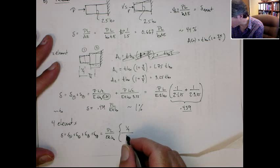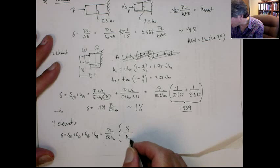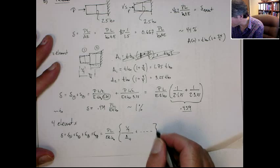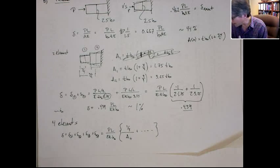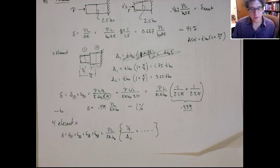And that something is what goes here. I'll call that area factor. So you sum all these up, multiply it by PL on ETH naught, and that's the deflection.